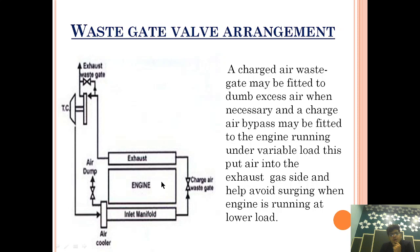If there is a change in load — say the engine was running at full load and suddenly came to low load — then excess air will be available in the inlet manifold. To prevent black smoke generation or to prevent insufficient energy at the turbocharger, the charge air can be bypassed to the exhaust gas side, providing an efficiency drive to the turbocharger. So in low load or variable load operation, air from the inlet side can be put into the exhaust side to avoid surging.